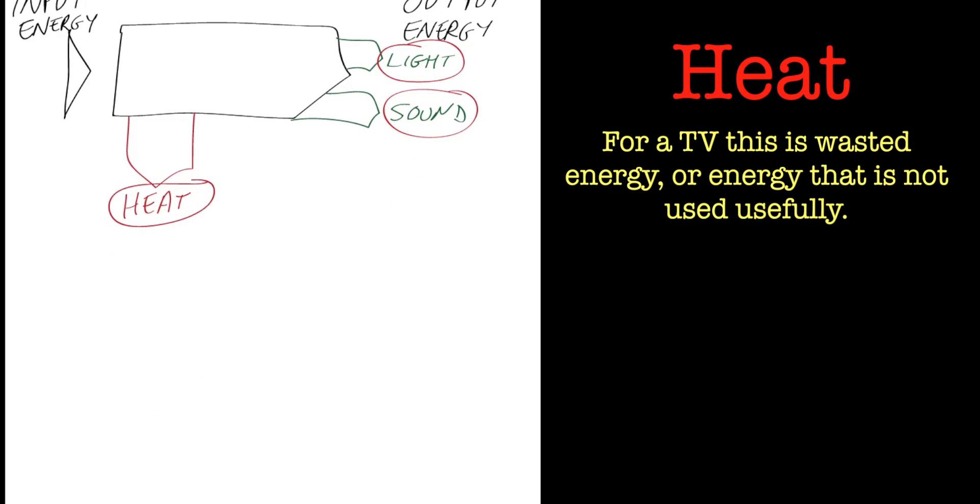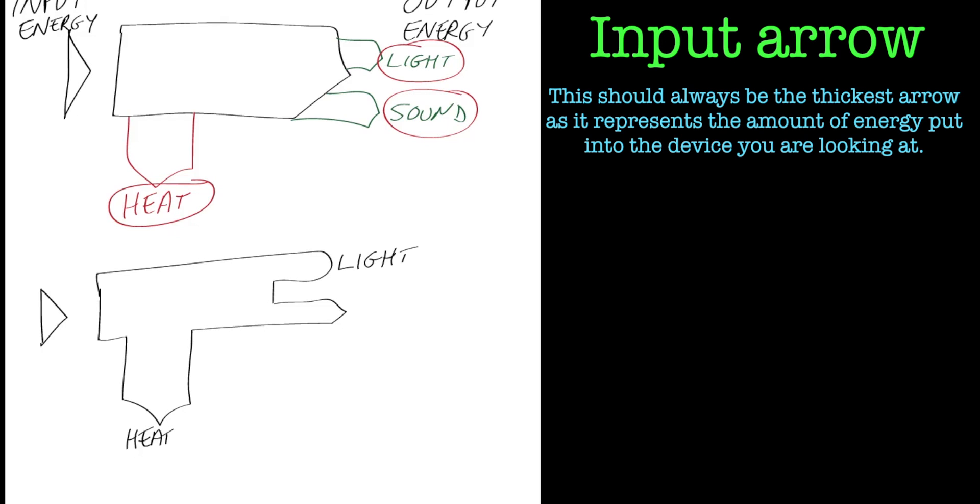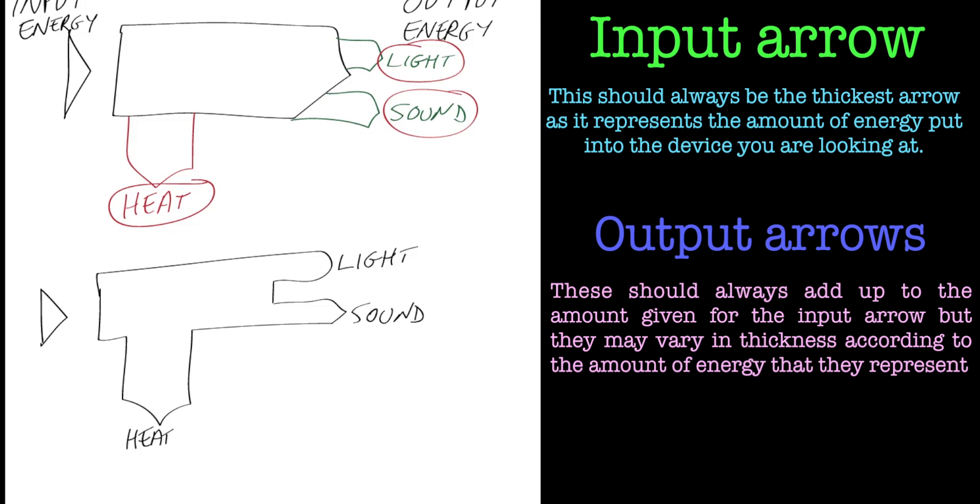So the output energies are light, sound, and heat. Let's draw the Sankey Diagram in a little bit more detail. The input arrow should always be the thickest arrow, and the outputs should always add up to the amount of input because of the conservation of energy.